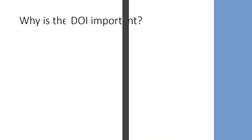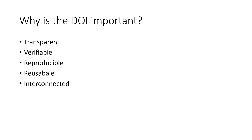Why is the DOI important? Mentioning the DOI of an article makes it accessible, verifiable, reproducible, reusable and interconnected. All these will make the scientific community more transparent to prevent any kind of misconduct or breach of publication.